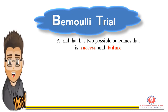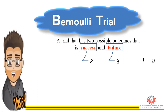Before we proceed, let me introduce what is called a Bernoulli trial. The Bernoulli trial is a trial that has two possible outcomes: success or failure. Normally we denote the probability of success as p and probability of failure as q, whereby q is the complement of p, so we get q as 1 minus p.